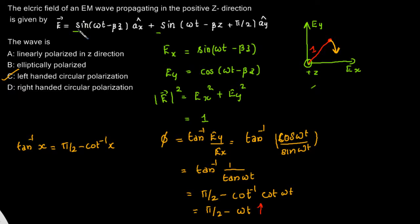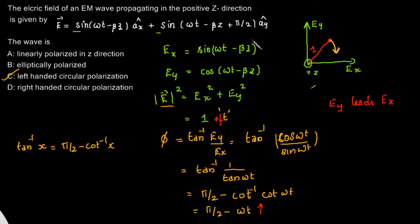Instead of doing all this calculation, we can do a quick check: if the magnitude is not a function of t but the phase is a function of time, then it is circular polarization. For a wave traveling along the z direction with Ex and Ey components, if Ey leads Ex, then it is left-hand circular polarization. Since the amplitude is constant and Ey is leading Ex, this confirms left-hand circular polarization.